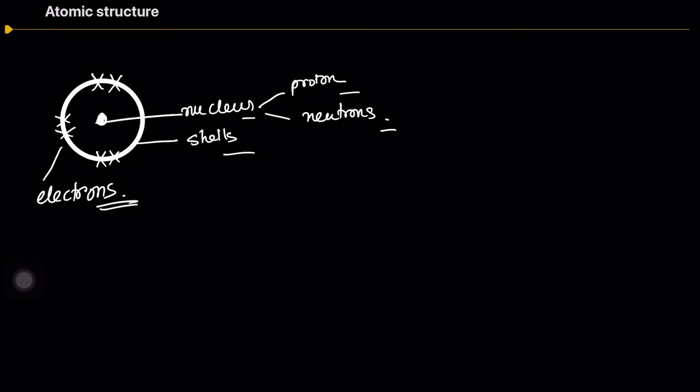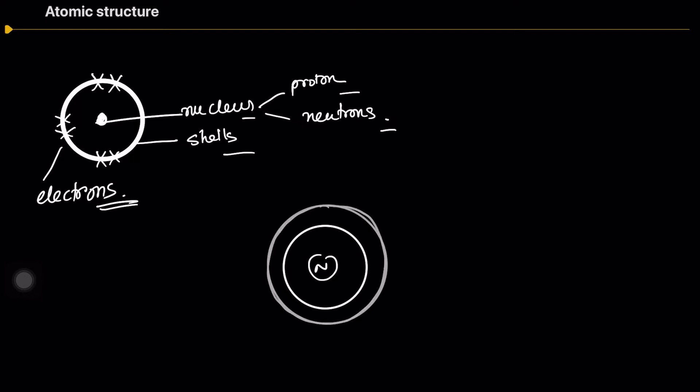We want to go a bit more in depth into the idea of an atom. We have the nucleus in the center, and then what we call the shells — the electron shells around it.